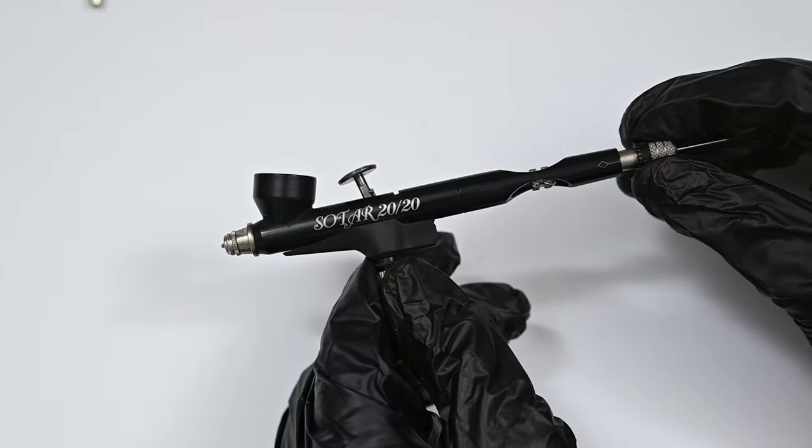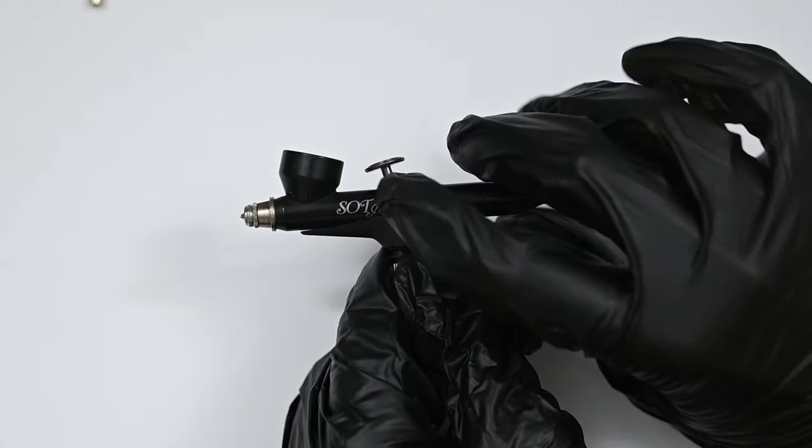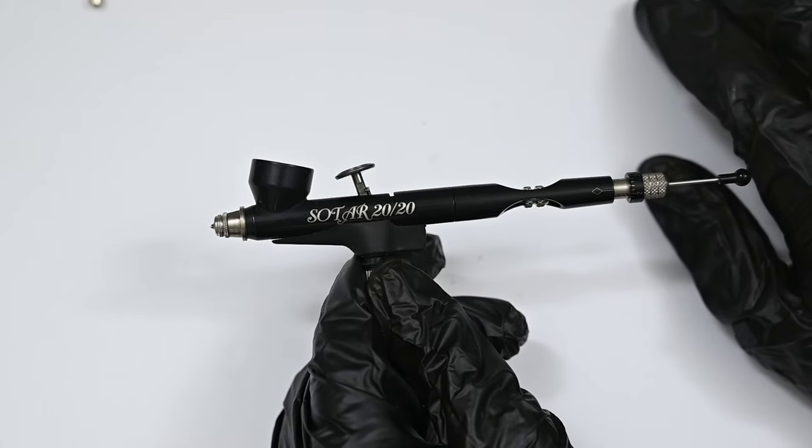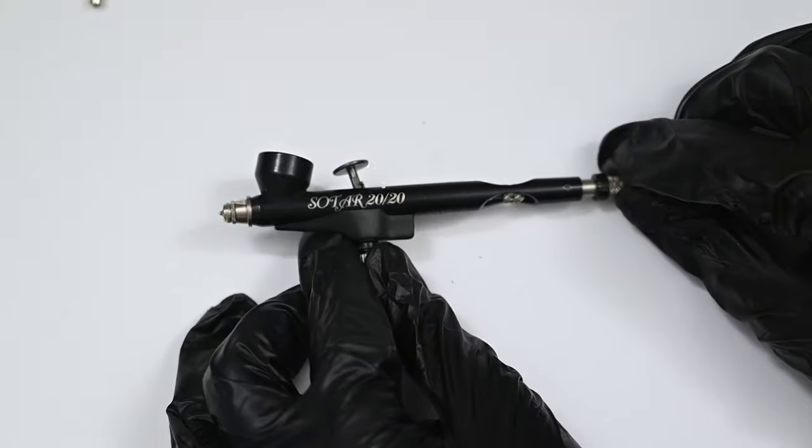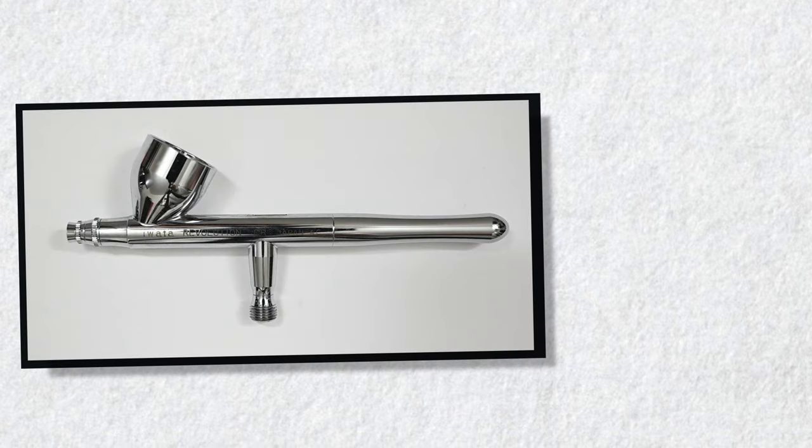But on the Sotar 2020, which is one of my favorite airbrushes, it works a bit differently. There is still a PTFE seal in here, but on this one, it's actually pressed in rather than screwed in. So there's no adjustment screw. It's just held in by compression. It's a real pain to adjust. I've done it a few times, but the good news is that Badger has a lifetime warranty on this. You're not supposed to be able to adjust it. So if anything goes wrong, they'll replace it.